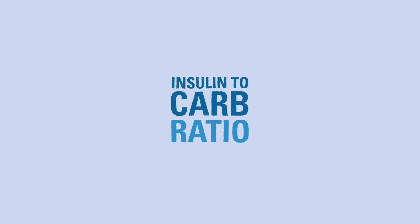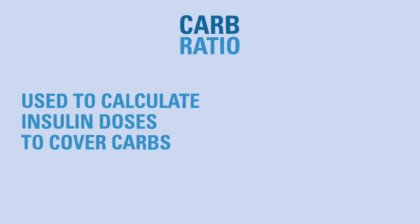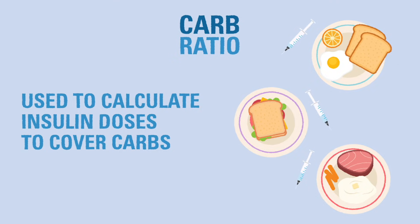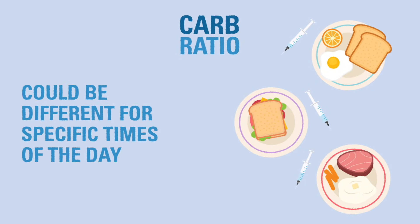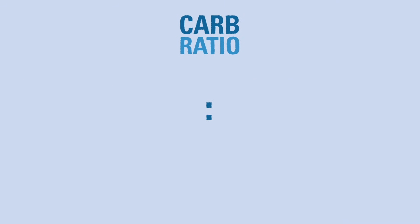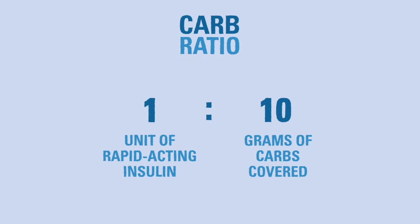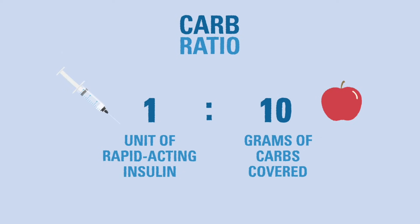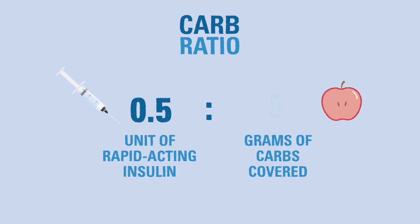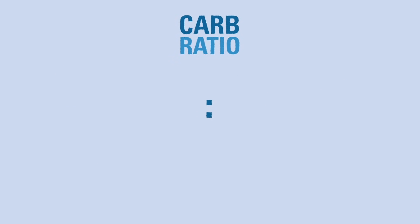The insulin-to-carb ratio, also known as the IC ratio, ICR, or simply carb ratio, is used to calculate how much rapid-acting insulin to give for meals and snacks. The ICR is a number that may change over time and might even be different for different times of day. It tells us how many carbs are covered by one unit of rapid-acting insulin. For example, an insulin-to-carb ratio of 1 to 10 means you would give one unit of rapid-acting insulin for every 10 grams of carbohydrates eaten, or half a unit for every 5 grams.